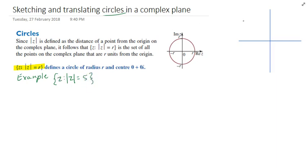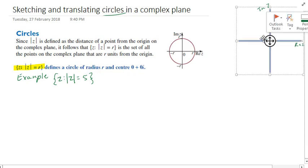So we can write this on our Argand diagram: real z, imaginary z. It's got a centre of 0, 0. Oops.